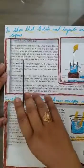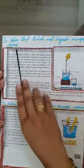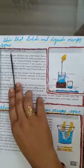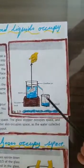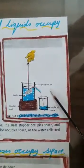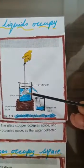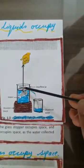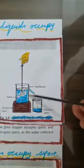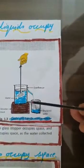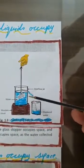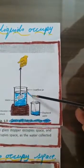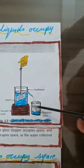Now coming to the third activity. In the third activity we will show that solids and liquids occupy space. See this figure. Take a glass stopper. This is a glass stopper. Tie it with a fine thread. Take an overflow jar. Children, this is an overflow jar. What is an overflow jar? An overflow jar is a jar which is provided with a spout. This is a spout. This is a beaker.